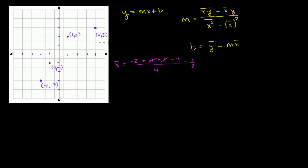Now let's do the mean of the y's. We have negative 3, negative 1, 2, and 3 — and once again we have four data points. Negative 3 and positive 3 cancel out. Negative 1 plus 2 is 1. So this is equal to 1 fourth.